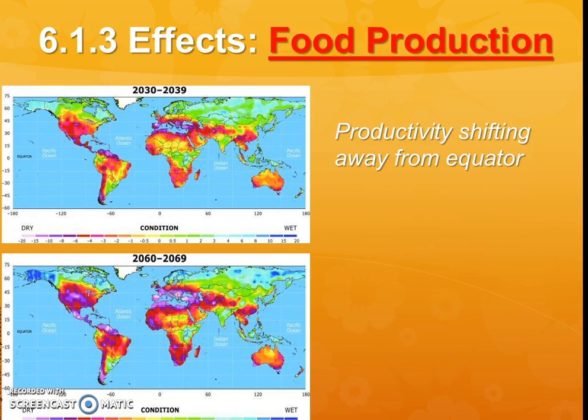Normally our most productive areas — think gross and net primary productivity, how much organic matter we're growing — that's normally highest at the equator where there's the most sunlight, the most rain, and the most warmth.